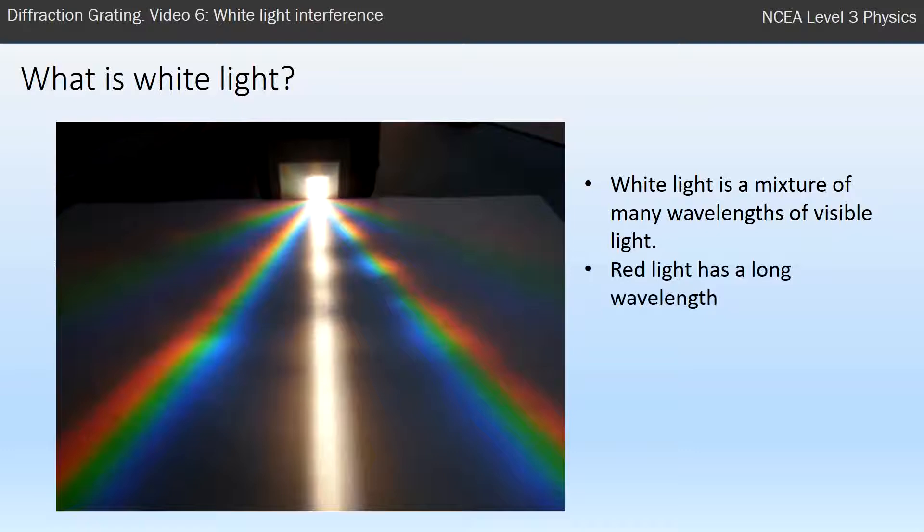Now, within that visible light, with all those colors, red, for example, has a long wavelength and blue has a much shorter wavelength.